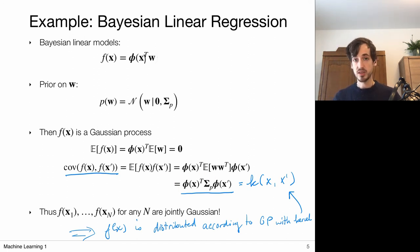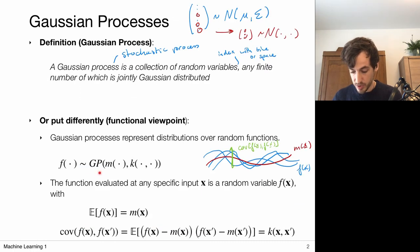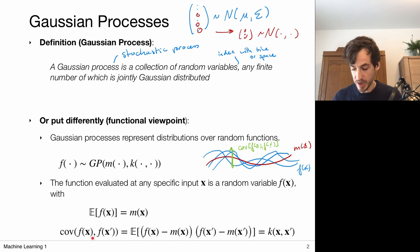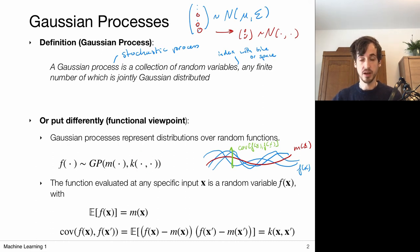To wrap up, a Gaussian process can be thought of as a distribution from which full functions can be sampled. These distributions are characterized by a kernel function and a mean function, describing the expectation of function values at a point x and the covariance between sampled observations. In the next video, we'll look at explicit examples by picking a particular kernel and seeing what functions drawn from that Gaussian process look like.